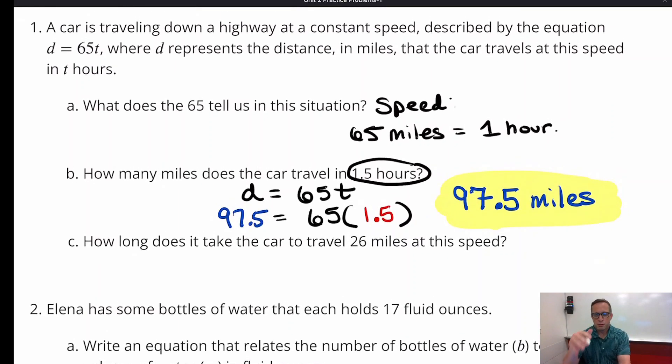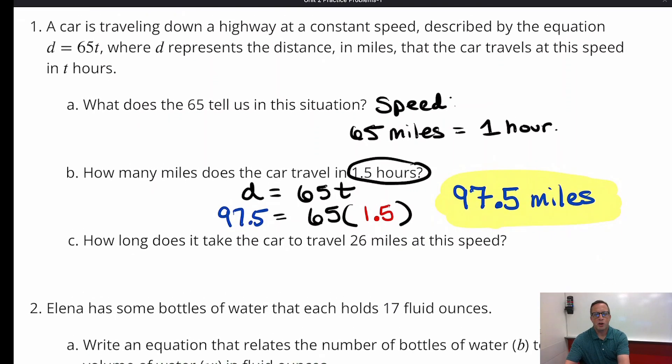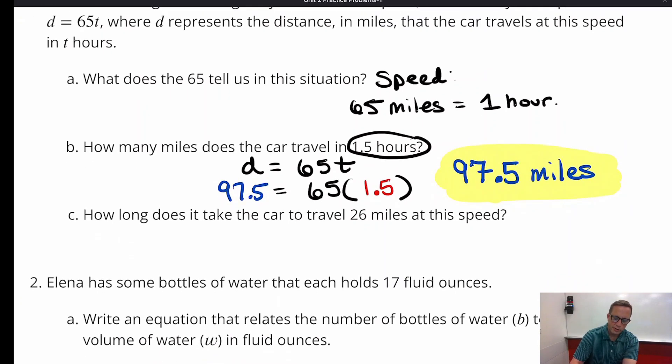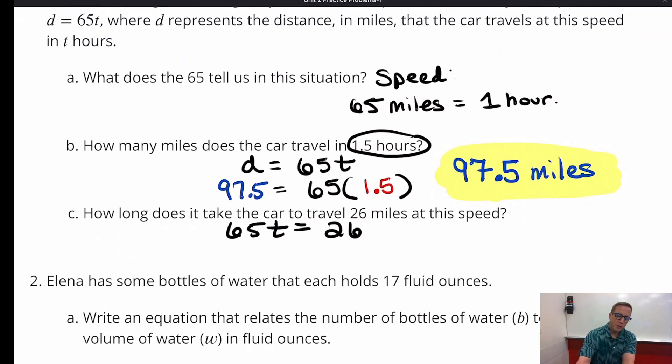It's very easy when they give you the equation. All you have to do is plug stuff in and then solve for it. How long does it take for the car to travel 26 miles at this speed? Now this is going to look more like an equation you see in algebra. So you've got 65T. I'm going to write it like this though. 65T equals 26. Because we're given the distance here.